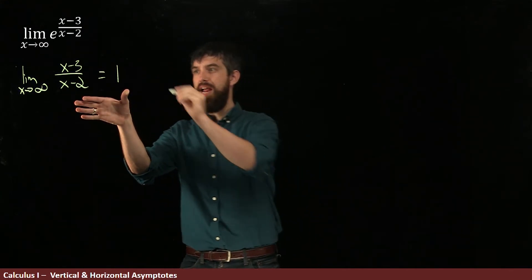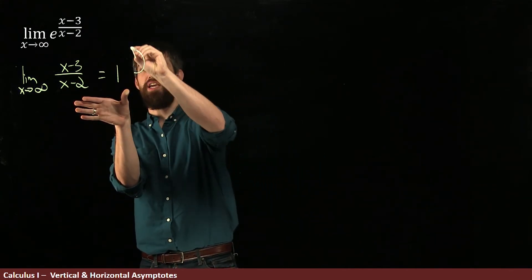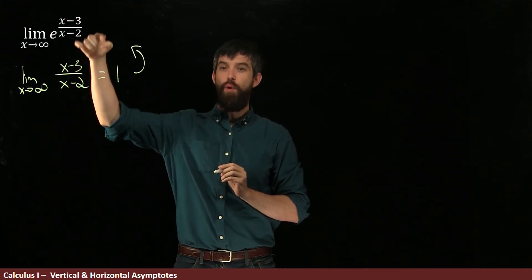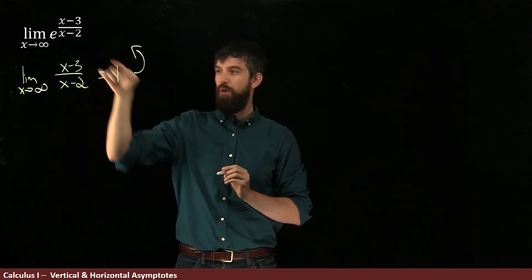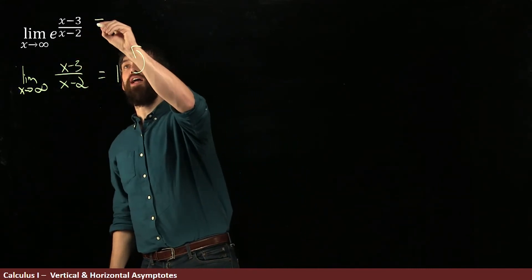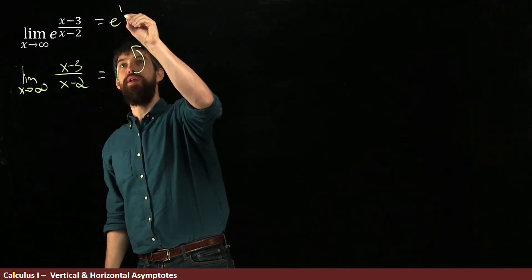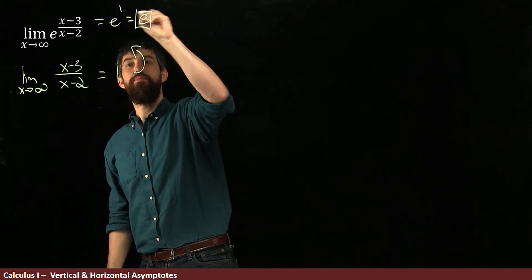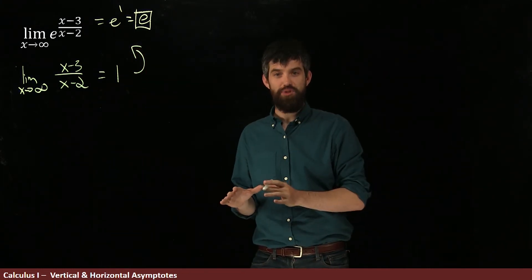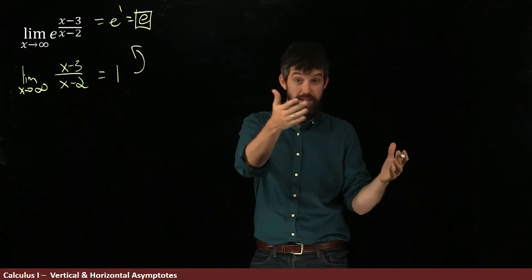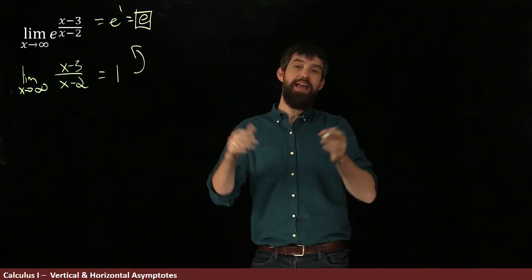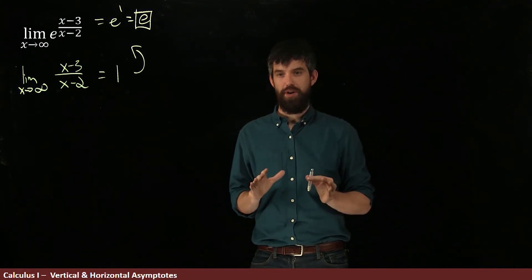Now that I know the inside limit is 1, I can feed it into the outer function. E to the power of whatever — that goes to 1. So this is e to the 1, or in other words, e. So we have a horizontal asymptote with equation y equals e, and that is the horizontal asymptote at positive infinity.